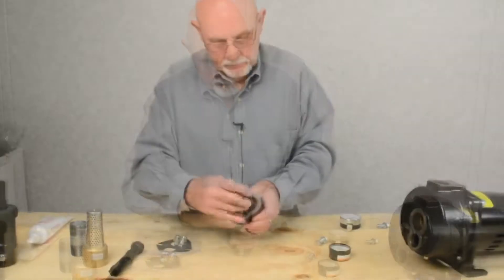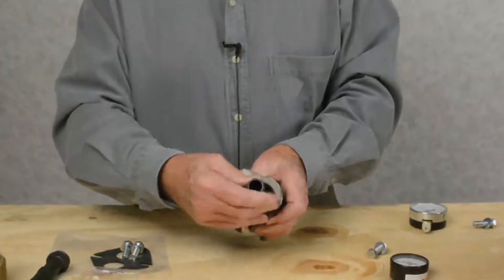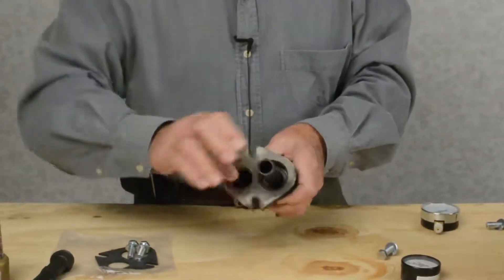You take the Venturi, screw it into your injector, which goes in over the top of that nozzle. Hand tight is good enough.